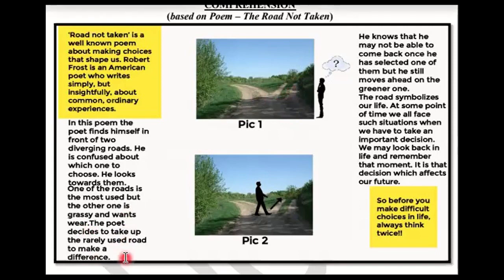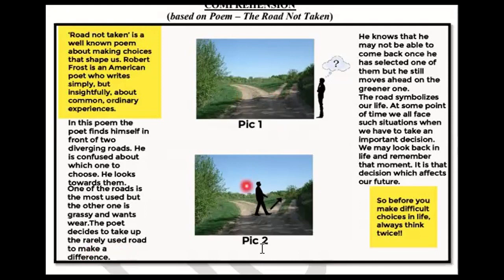The poet wants to make a difference in his life and for people in this world — he wants to make a difference. In this hope, he doesn't take the beaten path. Rarely used means very few people have walked that road. He knows that he may not be able to come back once he has selected one of them, but he still moves ahead on the greener one.